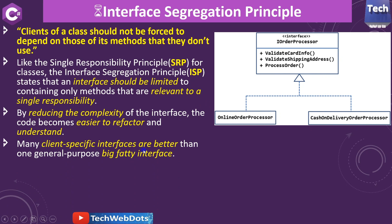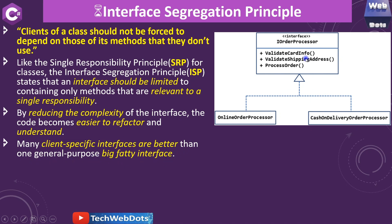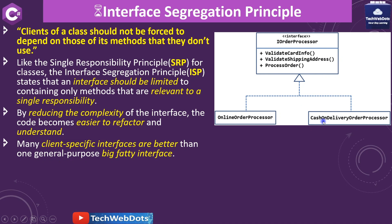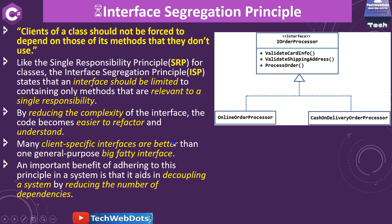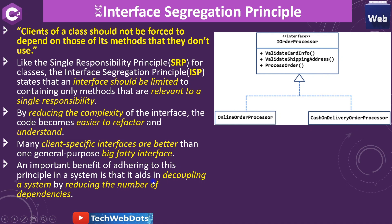That's why this interface is not valid for cash on delivery. Many client-specific interfaces are better than one general-purpose, big, fat interface. It doesn't mean we should implement the IOrderProcessor interface with the same methods for the CashOnDeliveryOrderProcessor client. We should create a new one.